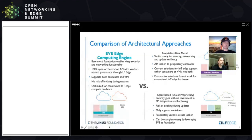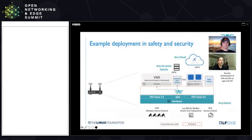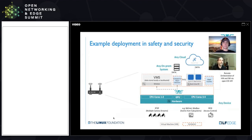Let me give you an example. One pattern we see all the time: people have legacy applications they need to support — you can't just get rid of existing investments — and they want to run new containerized applications on the same hardware. Imagine a gateway or a server deployed in a retail store, office space, or even a factory floor doing video surveillance. We're moving more and more to computer vision, but classic video surveillance is a key use case.